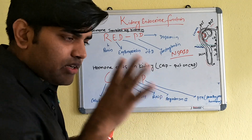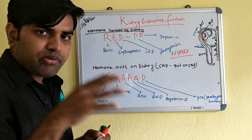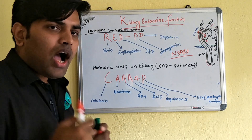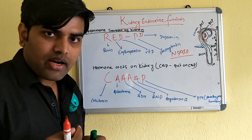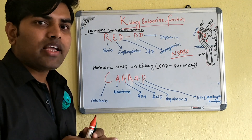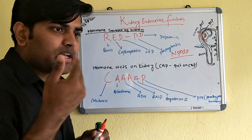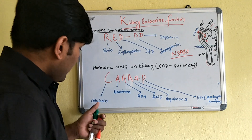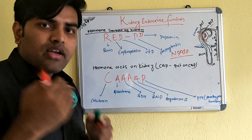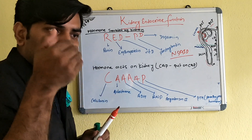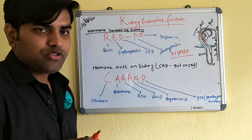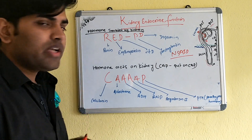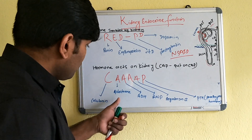Calcitonin is secreted from the parafollicular cells of the thyroid gland and plays a role in calcium homeostasis by preventing bone resorption. At high calcitonin levels in the blood, it acts on the kidney to increase calcium excretion in the urine, helping to lower blood calcium levels.